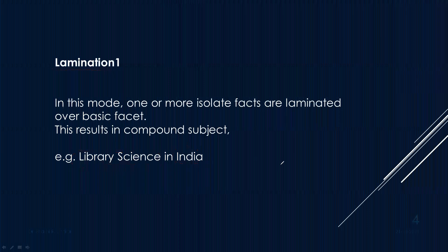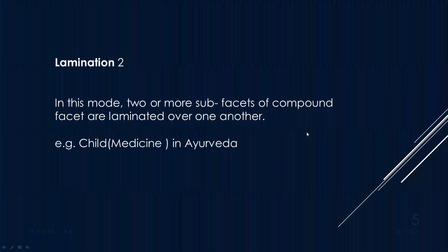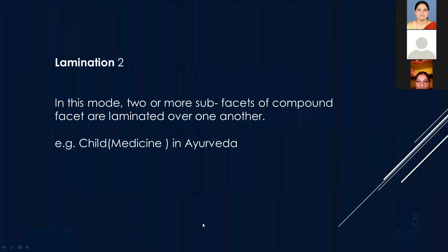In lamination two, two or more facets of a compound facet are laminated over one another. We can take the example 'child medicine in Ayurveda'. Here the basic subject is medicine, but within medicine there are many facets.